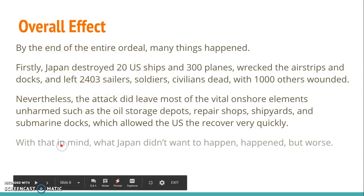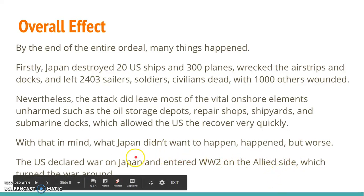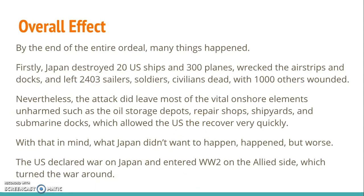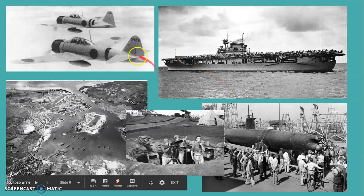Going back to what we just talked about — what Japan didn't want to happen actually did happen, and it was even worse than they feared. Japan didn't want the U.S. to join the war, but instead the U.S. declared war on Japan and entered the war on the Allied side, which actually turned the war around. Japan really lost a lot in the after-effects of all this. That wraps up the causes and effects.